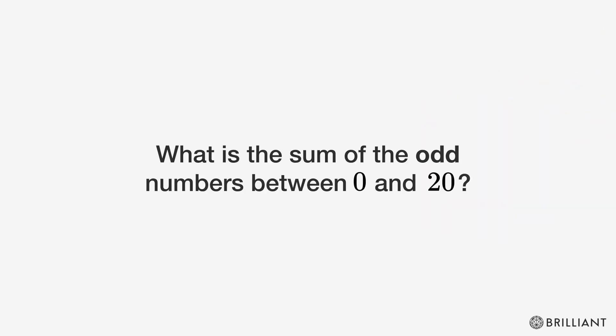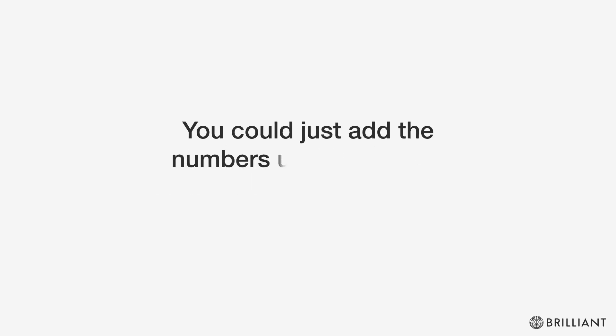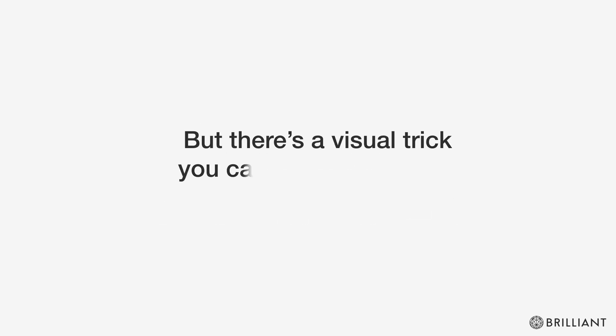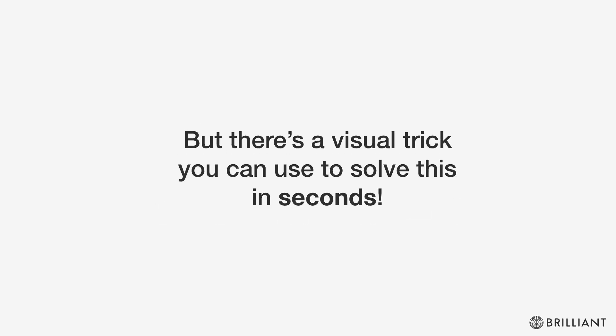What is the sum of the odd numbers between 0 and 20? You could just add the numbers up one by one, but there's a visual trick you can use to solve this in seconds.